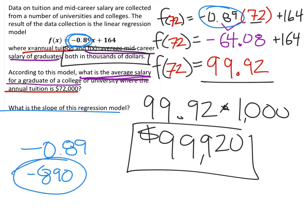If it asked for rate of change, we would label that negative $890 per thousand dollars of tuition. All right, and that solves that problem.